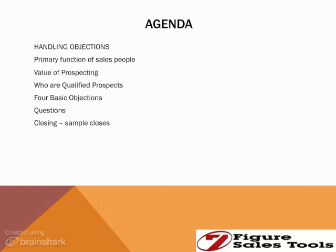In this session we're going to look at the primary functions of salespeople, the value of prospecting, who are qualified prospects, briefly review the four basic objections, how to ask questions, and go through some sample closes to get a feel for how you pull all this together. This is normally a three-hour workshop condensed into this session, so some stuff will be left out and some may be added that you won't need.